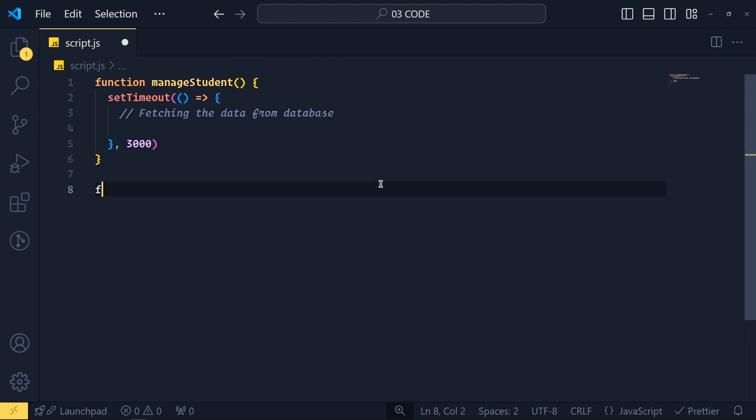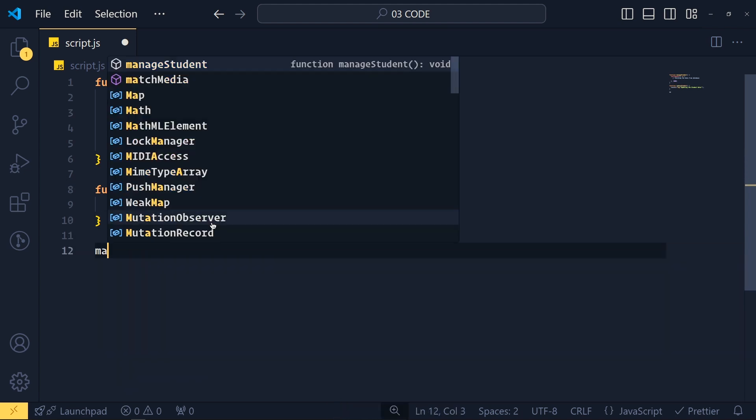So for that, we create another function called updateStudent. And inside this function, we simply console.log updating the student data. Now we want to call this updateStudent function after the 3 seconds delay. So what do we do here? Right. We can pass this updateStudent function as the callback function into the manageStudent function. So first of all, we call the manageStudent function.